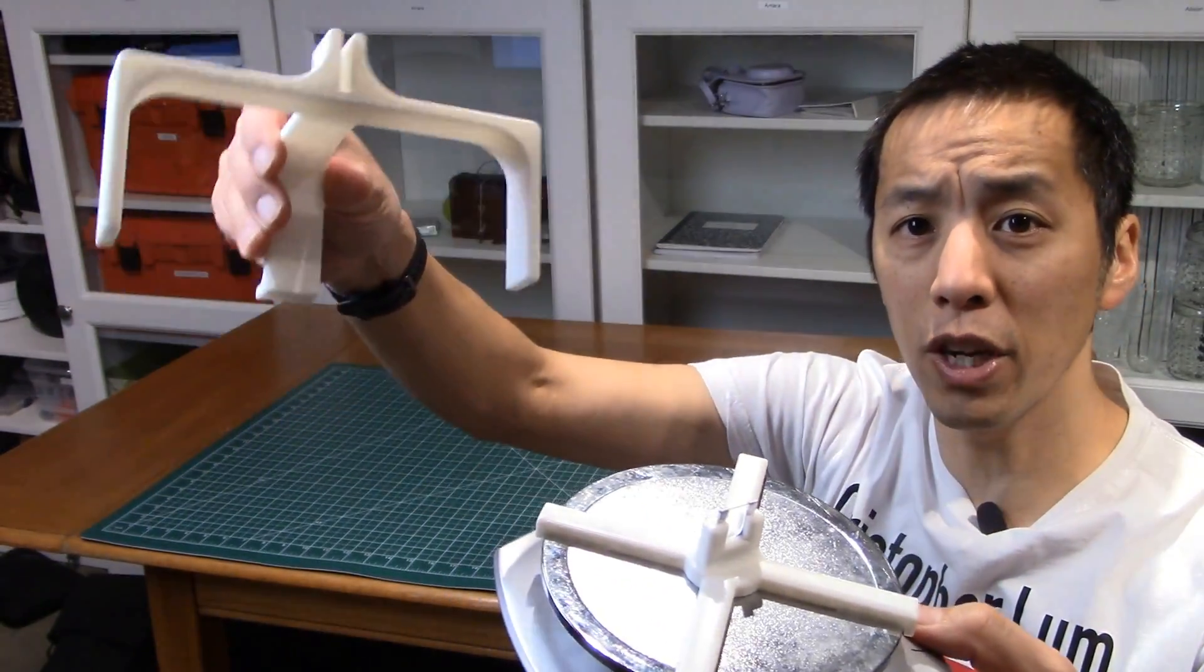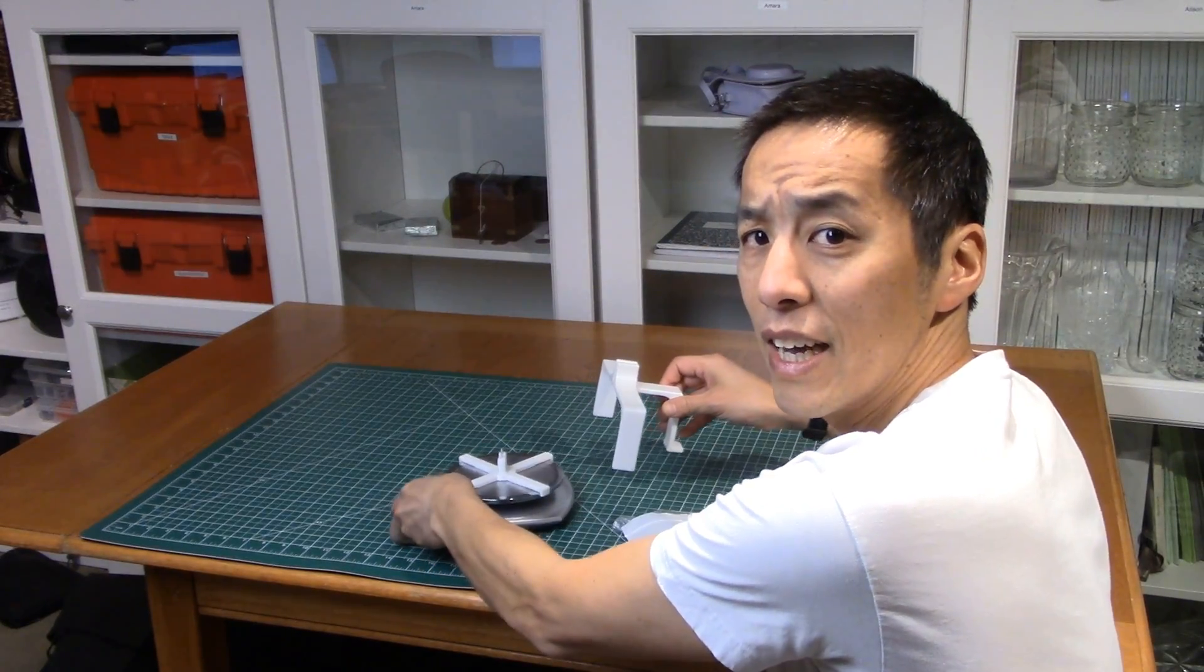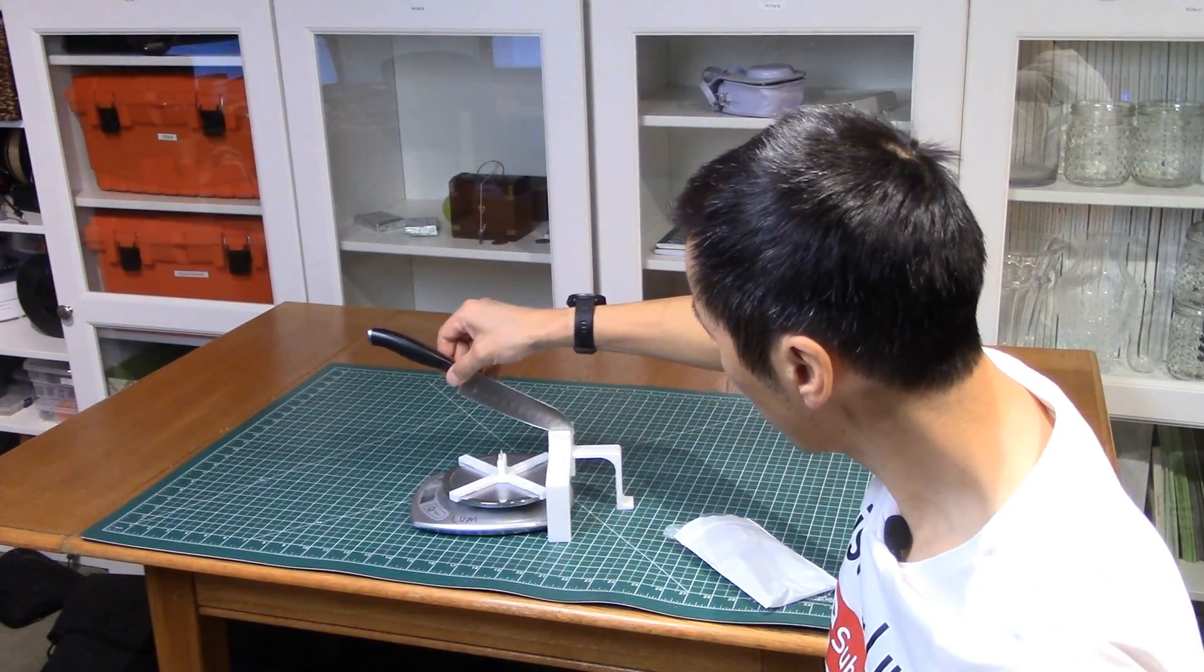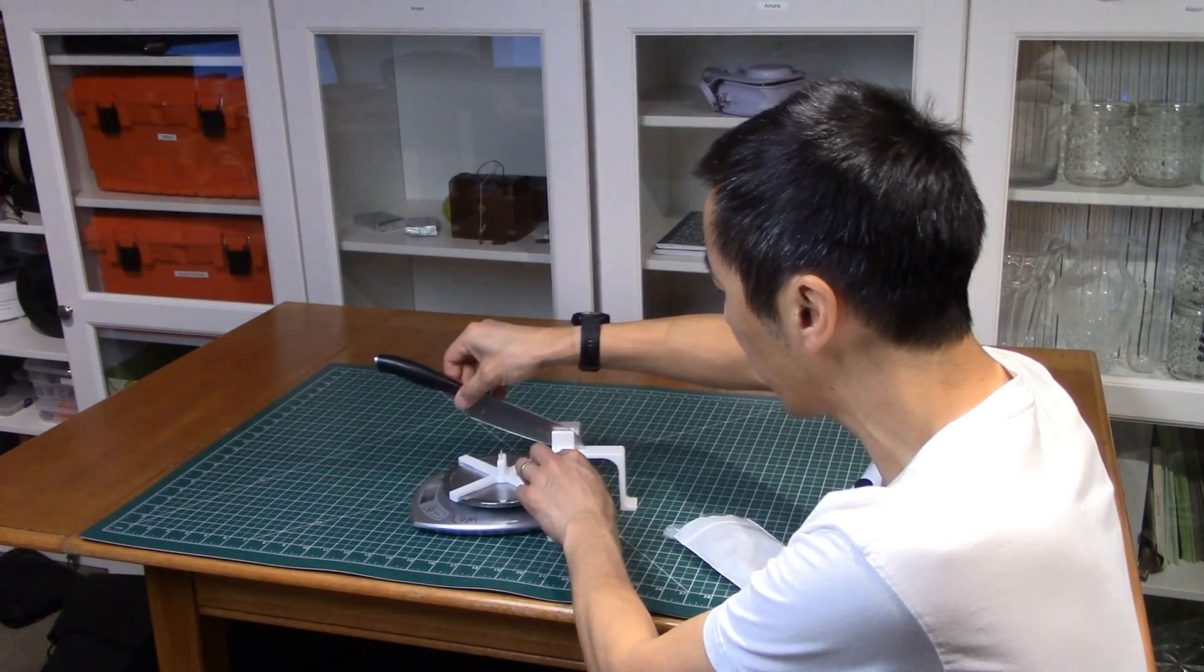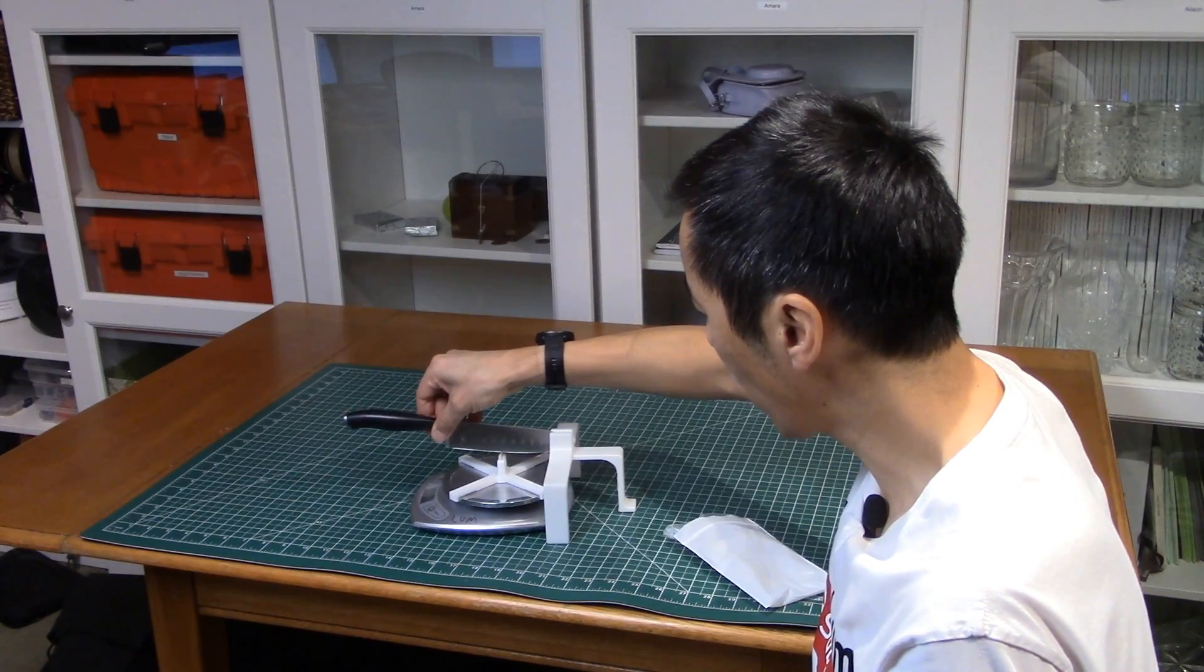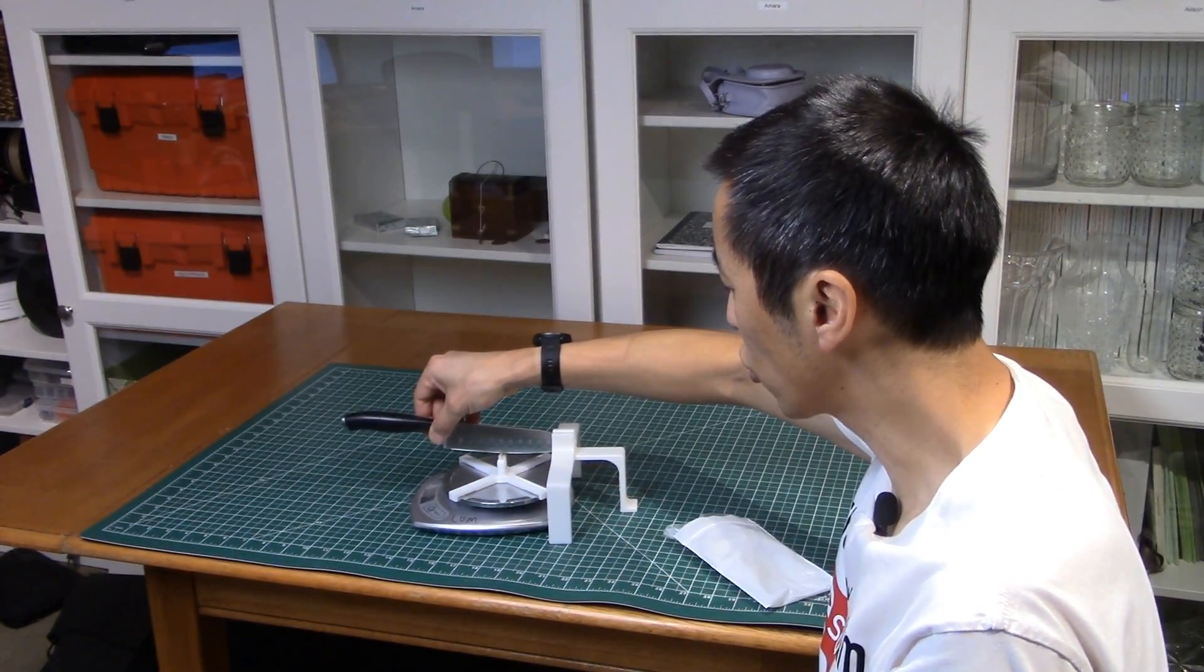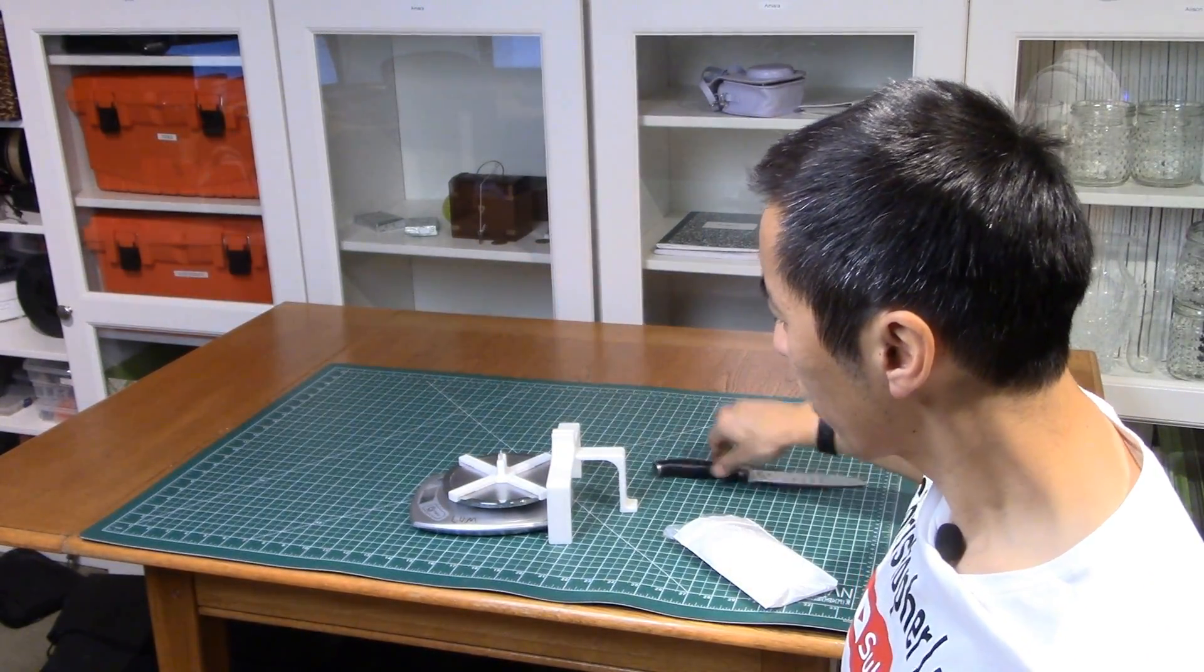And again, I just also 3D printed myself this little fulcrum. So the idea is you're gonna put this like that, right. Now you put the tip of the knife over here, and I've measured this. I've designed this so that the knife comes down directly vertically on the test fixture and the test article.